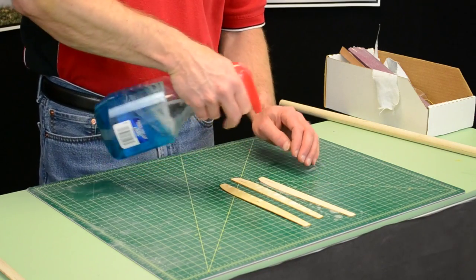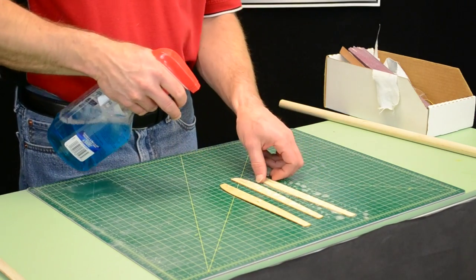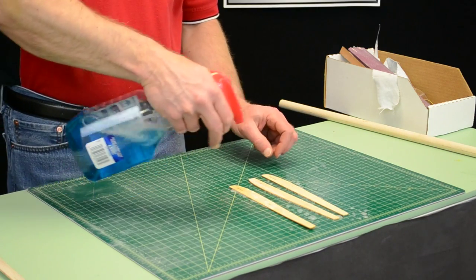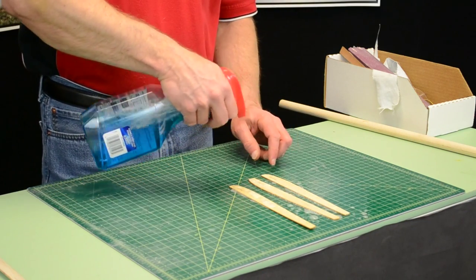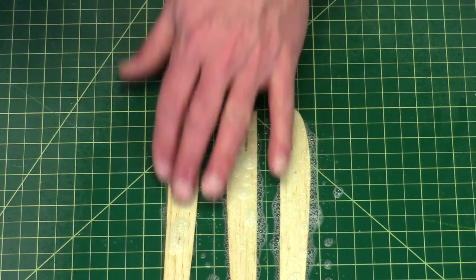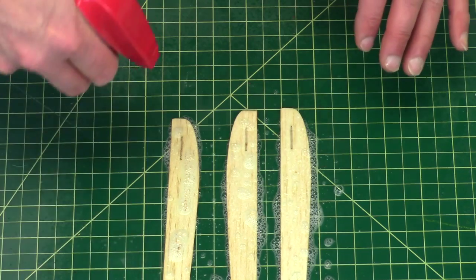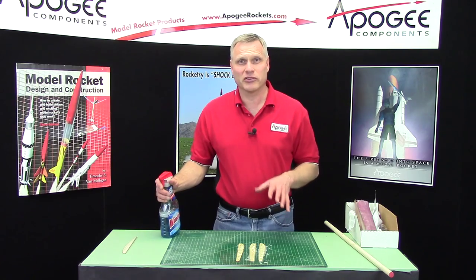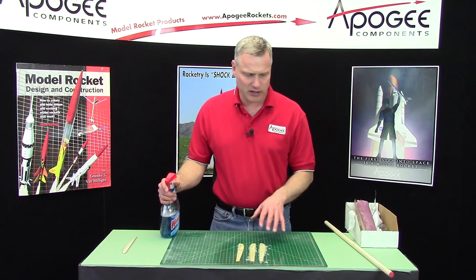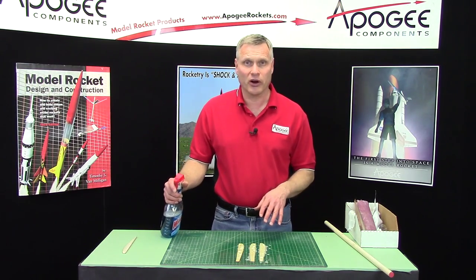The wood fibers are swelling and it's absorbing the water solution. I'll just flip them over and spray the backside as well. I'm going to wait five minutes and let the water be absorbed into the wood and then we'll come back and start wrapping it around the wood dowel.